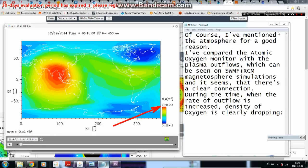Of course, I've mentioned the atmosphere for a good reason. I've compared the atomic oxygen monitor with the plasma outflows, which can be seen on SWMF plus RCM magnetosphere simulations, and it seems that there is a clear connection. During the time when the rate of outflow is increased, density of oxygen is clearly dropping.